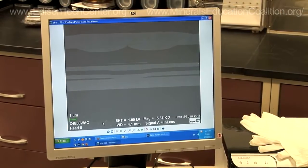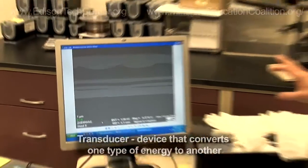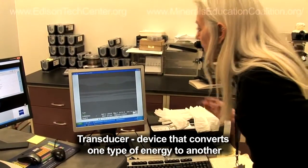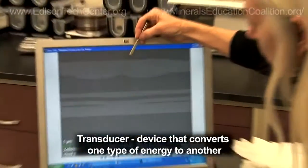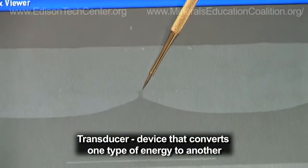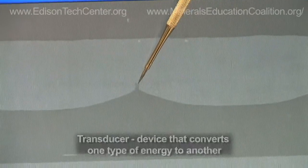This is a very close view of the transducer and at the top, it's not necessarily possible to see here, but we'll show a picture in a minute, is what we call the write pole.